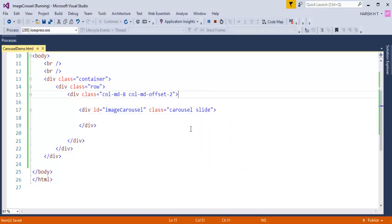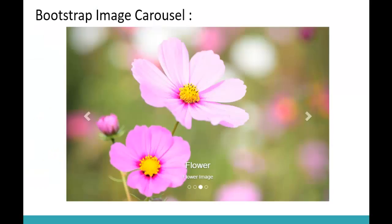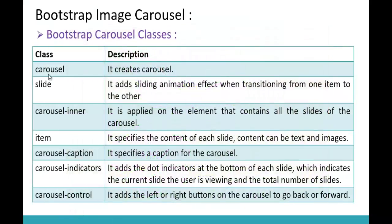Let me explain why I'm adding the carousel and slide classes. The class 'carousel' creates the carousel — it's the basic class. The 'slide' class adds the sliding animation effect when transitioning from one item to another, meaning when the first image moves and the second image comes in, the slide class adds that animation effect.